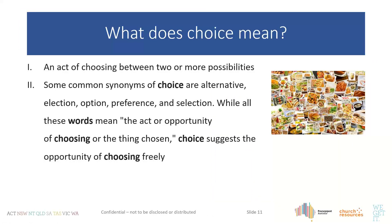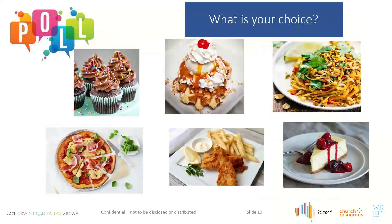What does choice mean? Simply: the choice between two or more possibilities. Related words include election, options, preferences, alternative, and selection. Essentially it's the act or opportunity of choosing. You might choose between dark or milk chocolate, or vanilla versus chocolate ice cream — it's about presenting choices so people have the ability to make one.